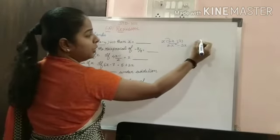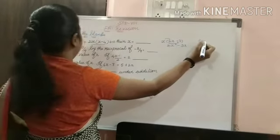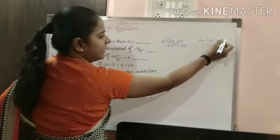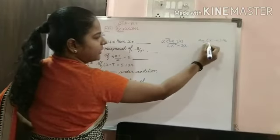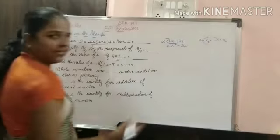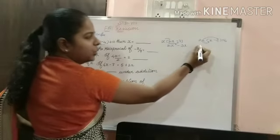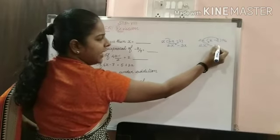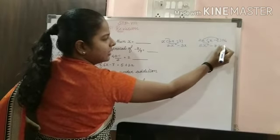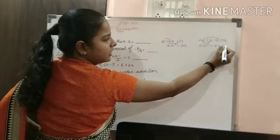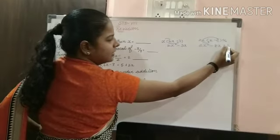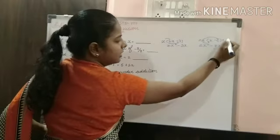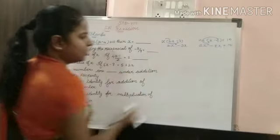Next we are doing the RHS. On the right hand side: 2x(x minus 4) plus 10. So 2x is multiplied here and there. What we get is 2x squared minus 8x plus 10.